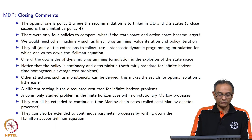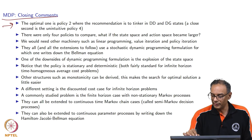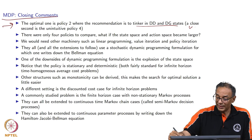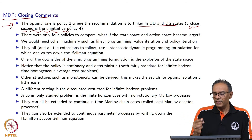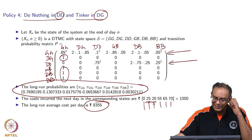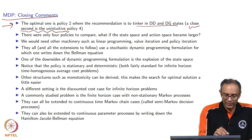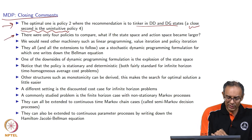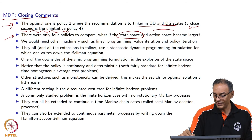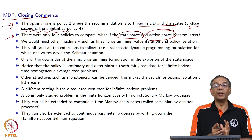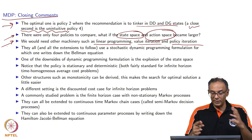The optimal policy is policy number 2 — to tinker in both DD and DG states. A close second is the counterintuitive policy number 4, where you tinker in DG but do nothing in DD. We only had four simple policies to compare, which was easy by enumeration. However, the state space and action space could easily explode. For larger problems you would need significant machinery such as linear programming, value iteration, or policy iteration.